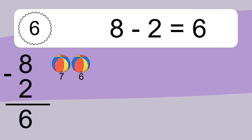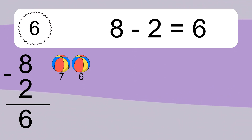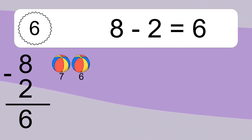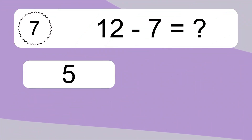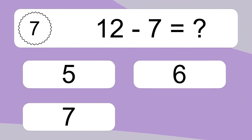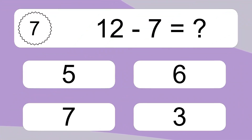8 minus 2 equals what? 8 minus 2 equals 6. Let's count it: 7, 6.